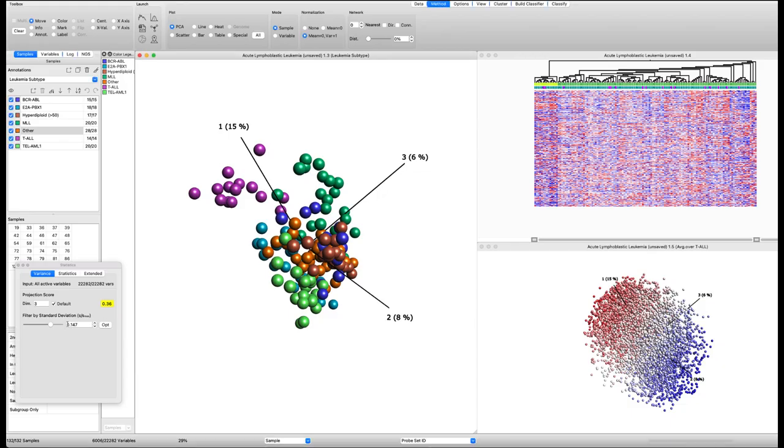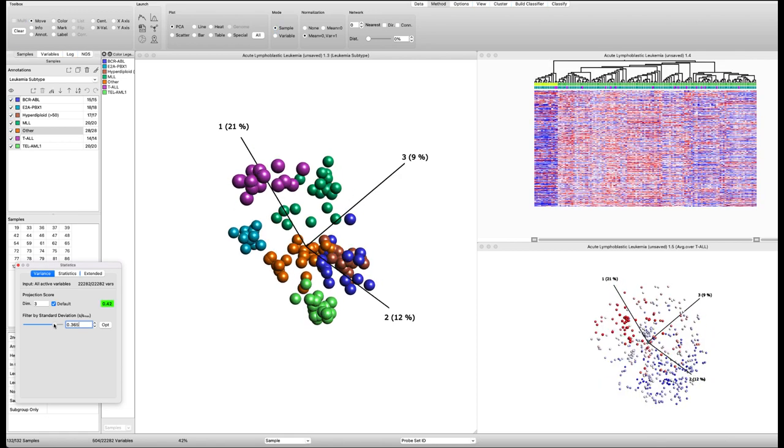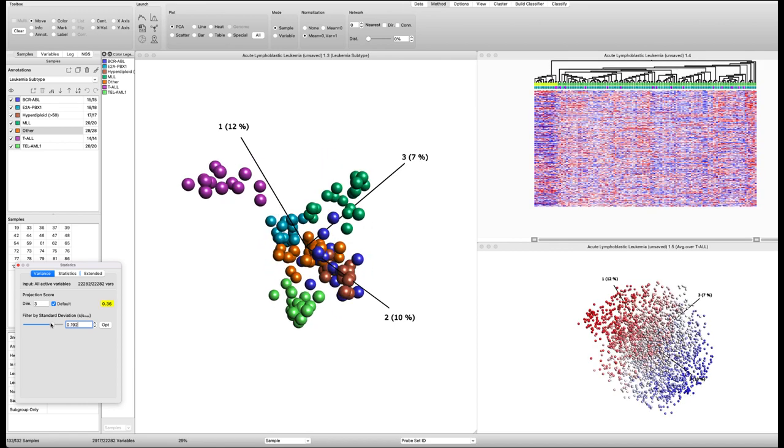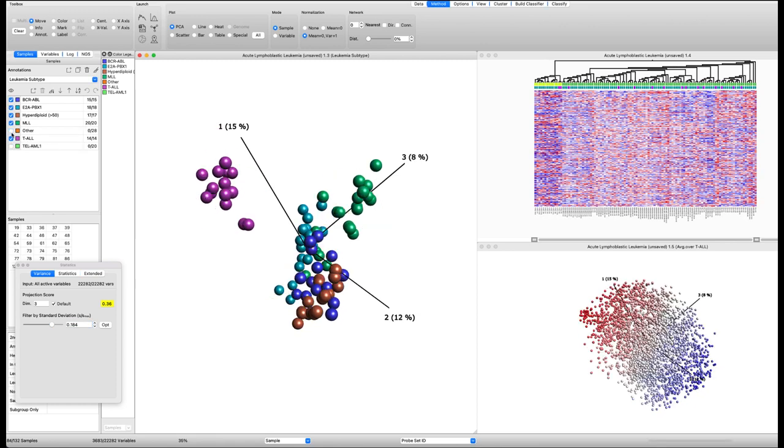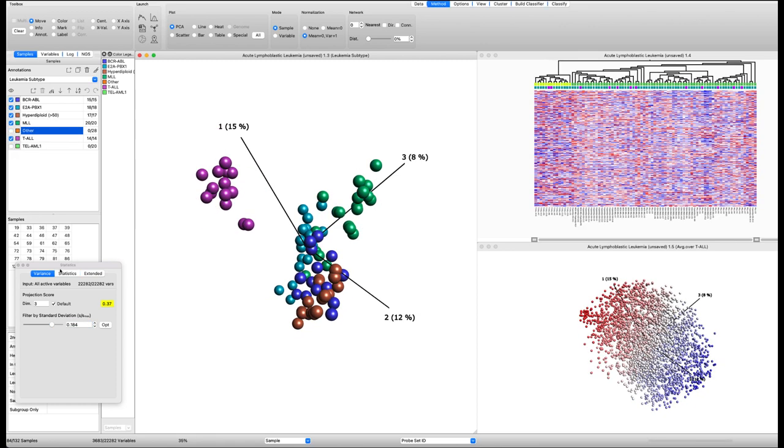Qlucore Omics Explorer makes data analysis easier and faster and improves the exploration and interpretation of complex multi-omics data. You obtain results with just a few mouse clicks. The program includes a range of powerful tools and statistical filters but is still very easy to use.